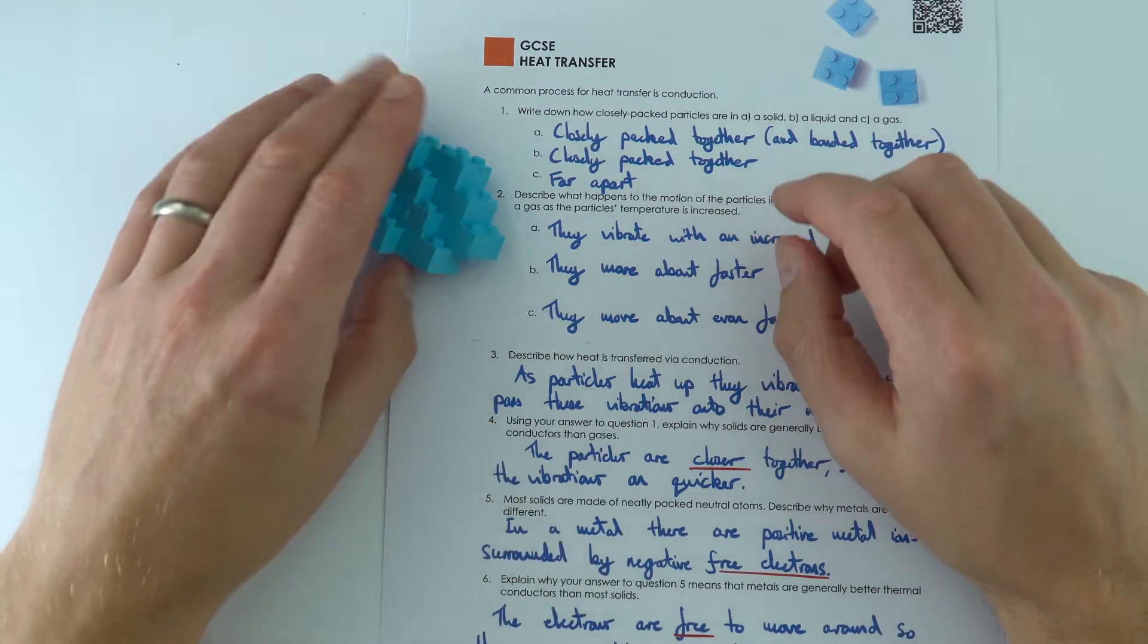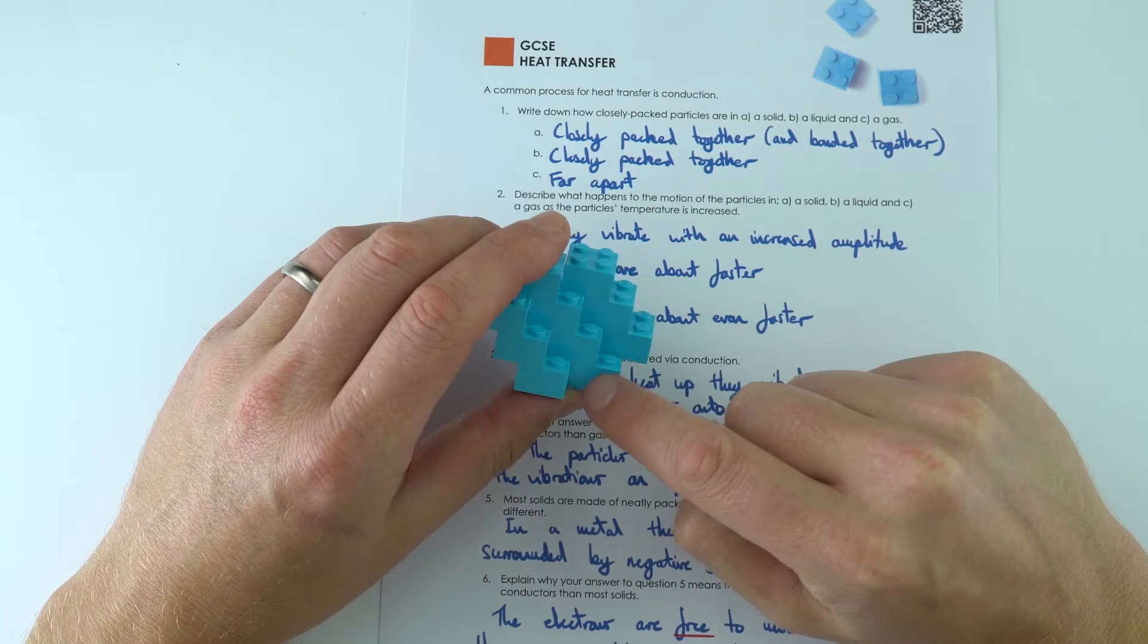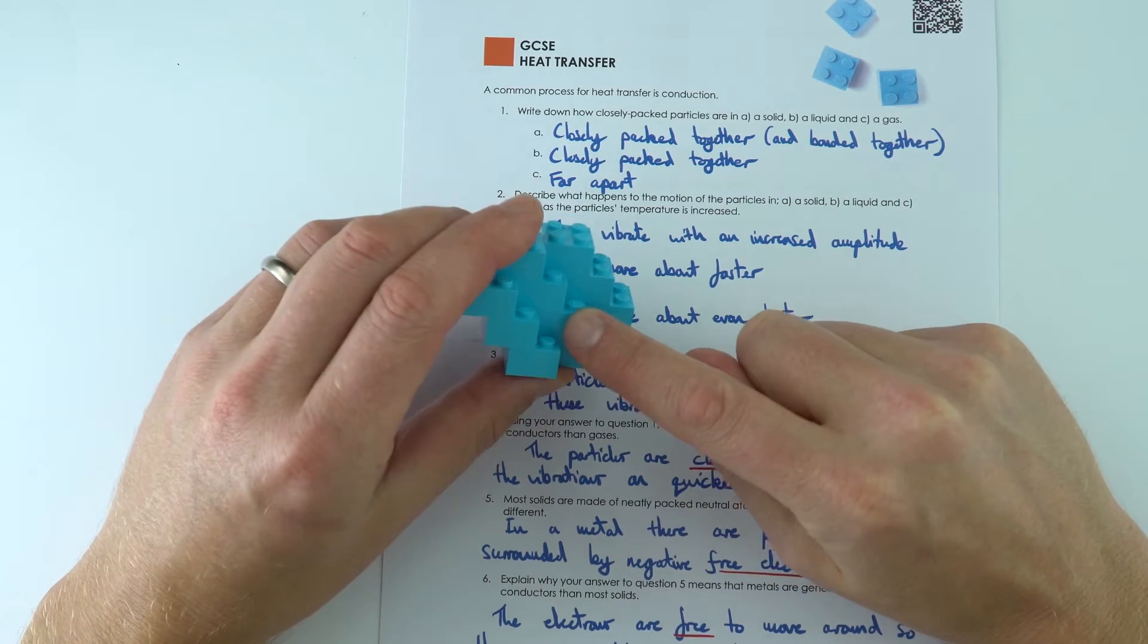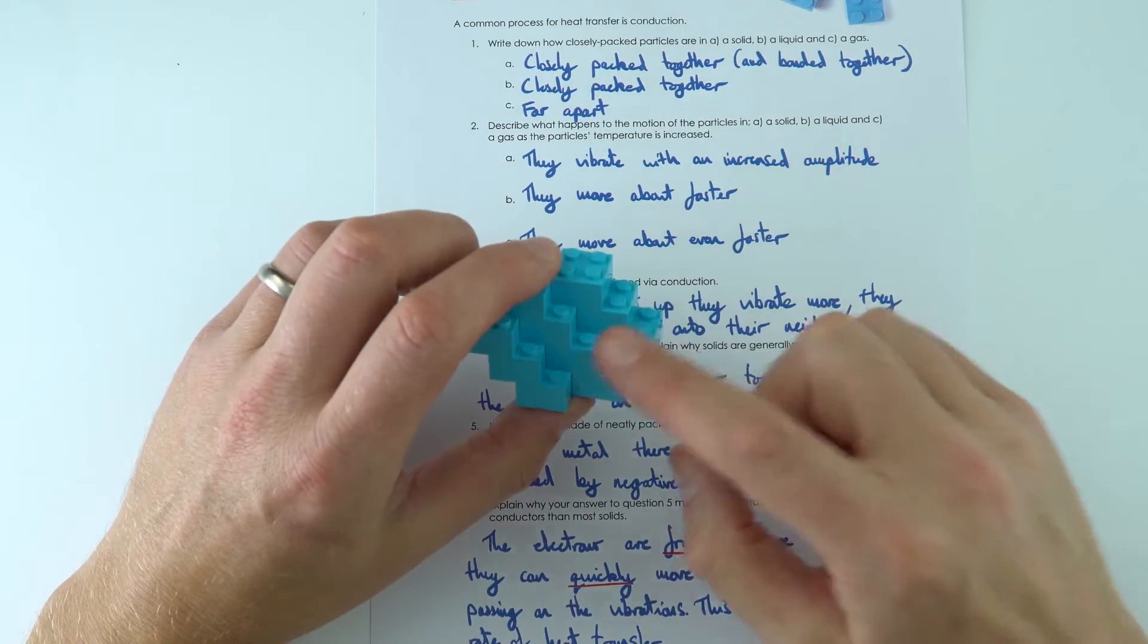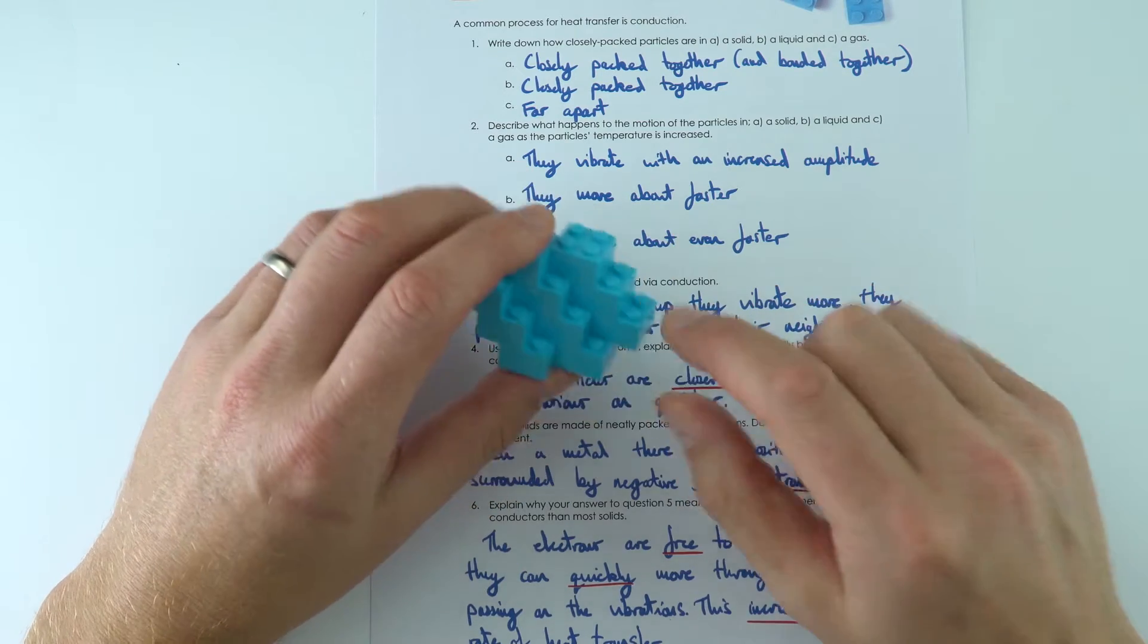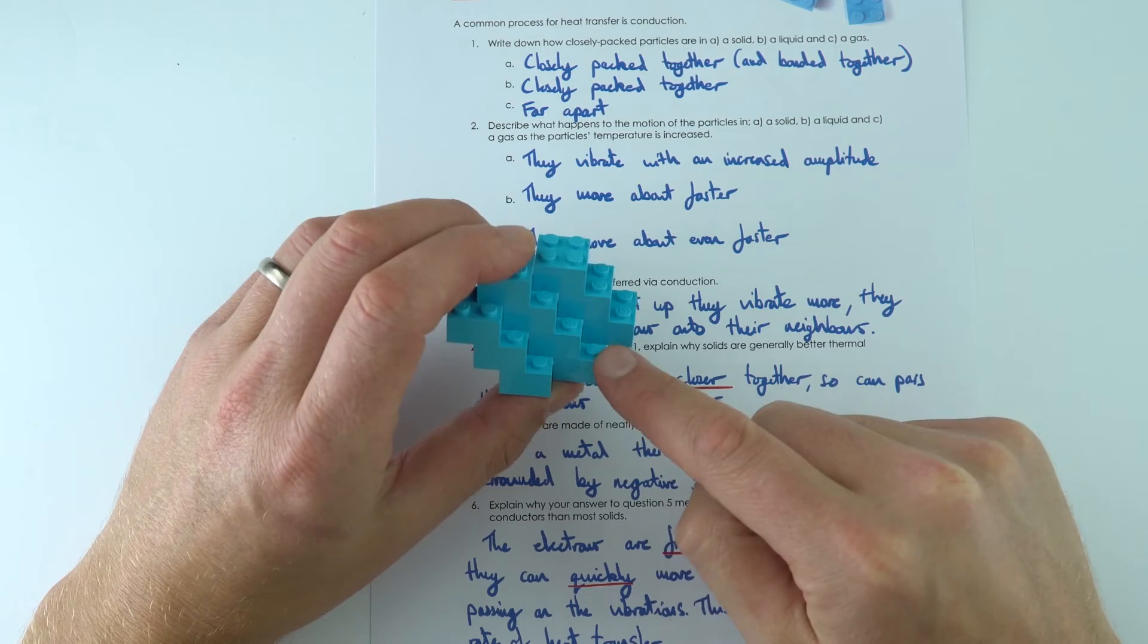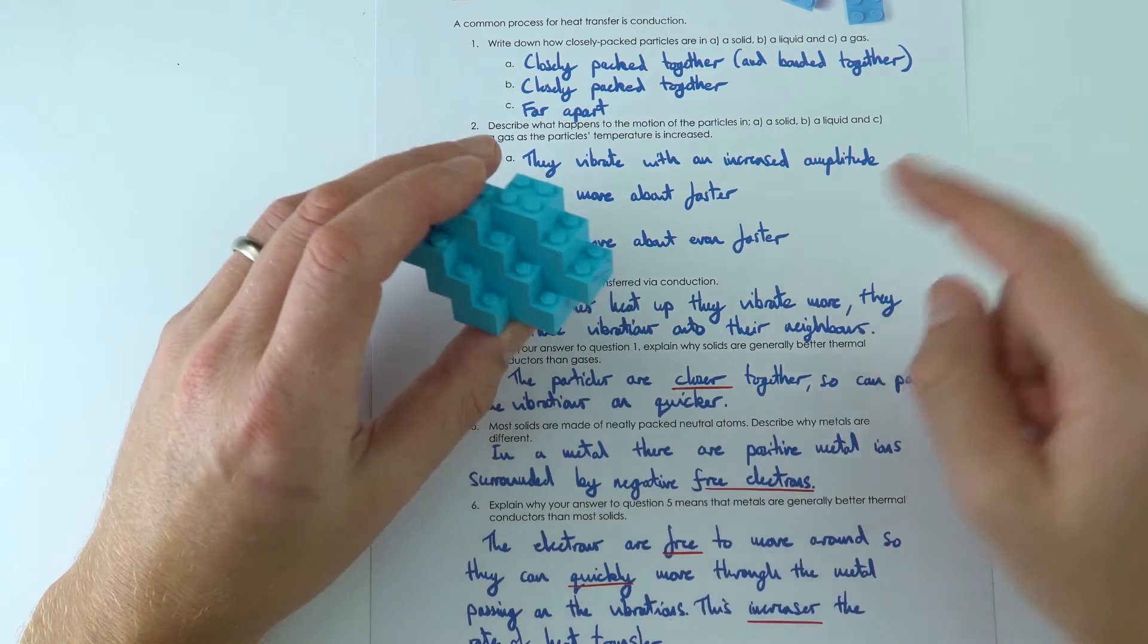Now conduction often happens in solids because the particles are so close together that when they start to heat up and they vibrate, they pass those vibrations onto their neighbours, and if you've got something which is a metal, then we also have free electrons surrounding this positive metal ion lattice. The free electrons are free to move through the material, and that means they pass on the vibrations not just to their neighbours, but it's quicker to pass them through that material.